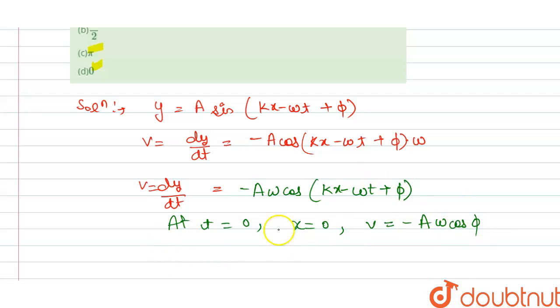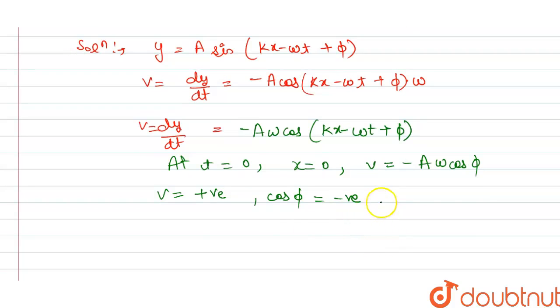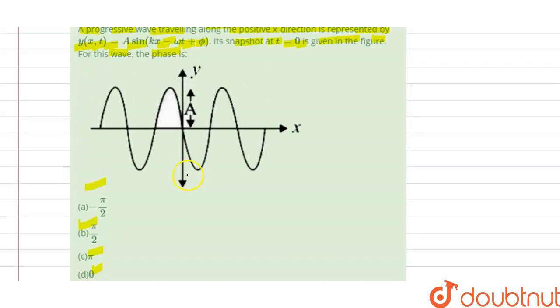We get A cos - these terms will become zero here - so this is cos phi. Velocity is positive, v is positive, and cos phi is negative here. So if cos is negative only at phi equals π.